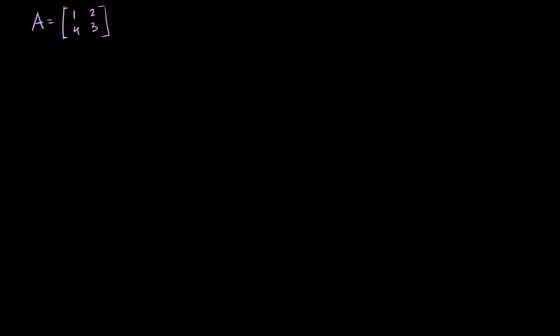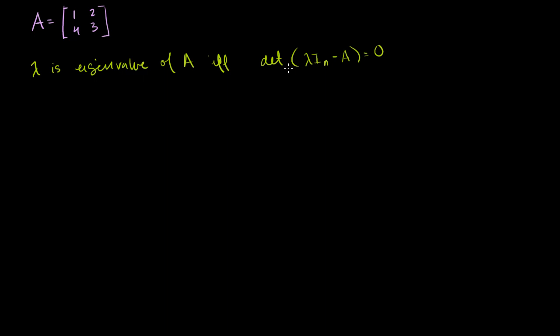In the last video, we started with the 2 by 2 matrix A equal to [[1, 2], [4, 3]]. We used the fact that lambda is an eigenvalue of A if and only if the determinant of lambda times the identity matrix minus A is equal to 0. This gave us a characteristic polynomial, and we found that the eigenvalues for A are lambda equal to 5 and lambda equal to negative 1. If we assume a non-zero eigenvector, A times some eigenvector equals lambda times that eigenvector can be solved for lambdas 5 and minus 1.